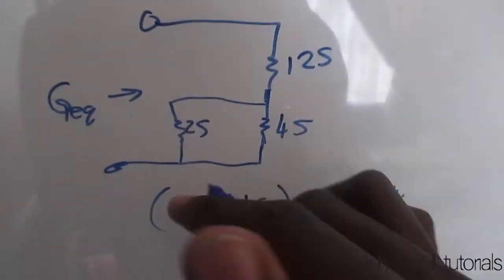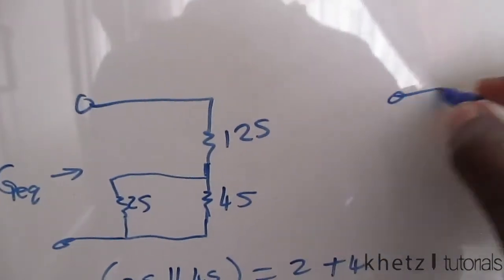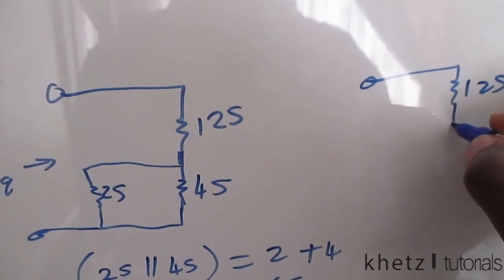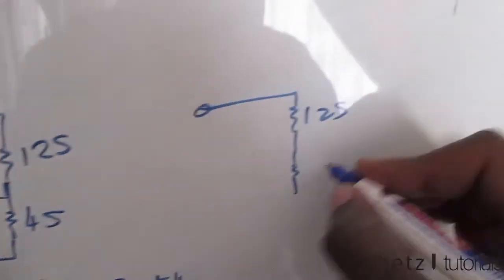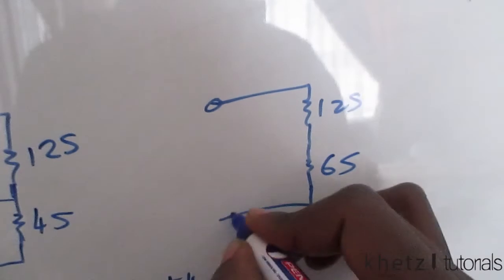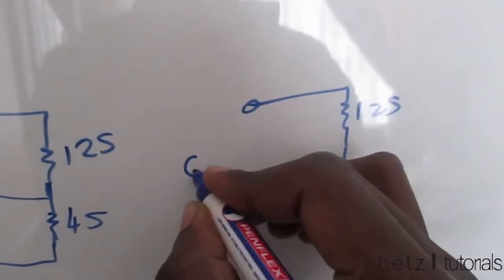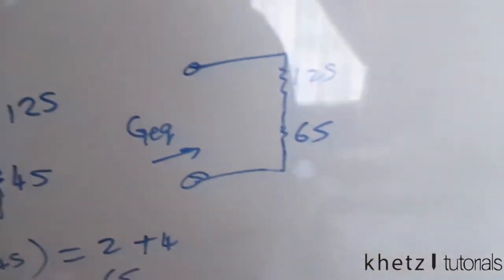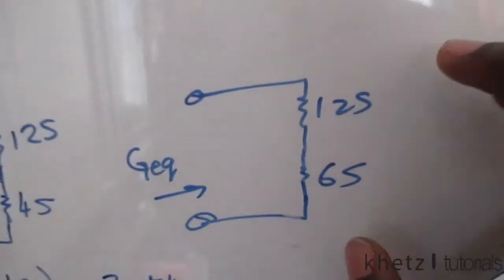And then now after doing that, we have 12 up here and we have six, which we just calculated now, and calculating the equivalent from these two is our answer.